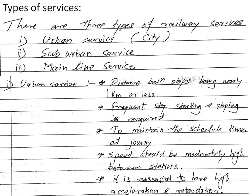Based on the application, traction services have two types: passenger and goods or freight services. Again, these two services are each of three types. Passenger service caters for: first, urban services, also called city service or metropolitan; second, suburban service; and third, mainline service.